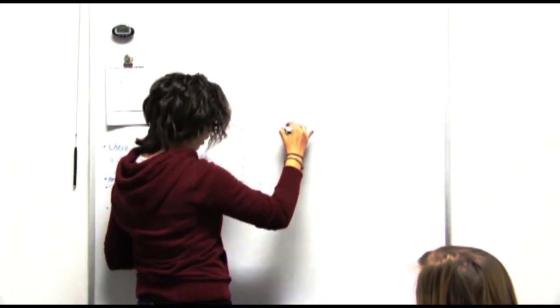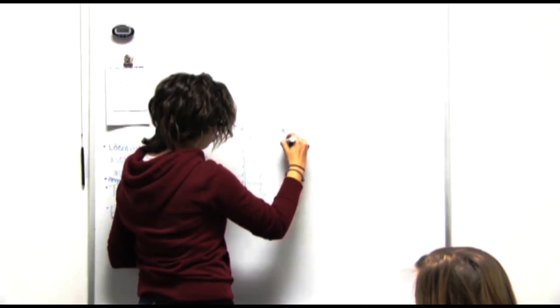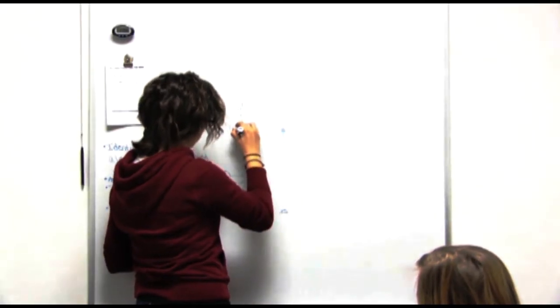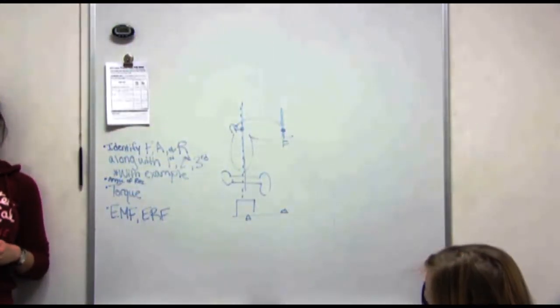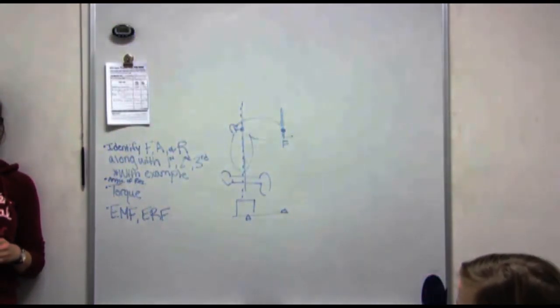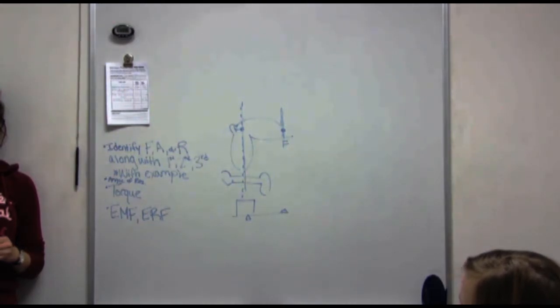So that would be maybe here. So again, we draw that line, so that's where your point of force would be. We have our resistance. Now, where is our axis? What are we rotating around? I don't know if it's our shoulder, but I don't know if that's right.